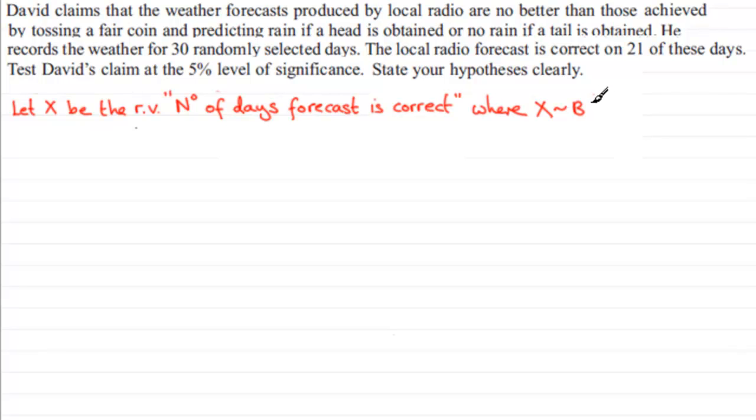It's going to be a binomial distribution, and I know that because I've got a finite number of trials, 30, and I know that there's two outcomes. If David throws this coin it will either be a head or a tail, and so assuming that events occur independently and probability remains constant, which it basically does...